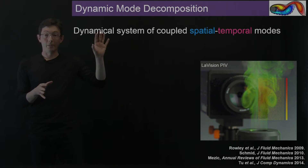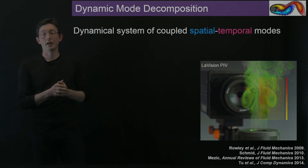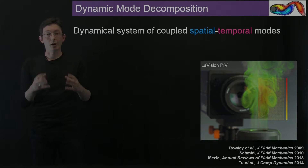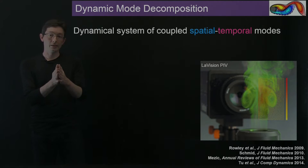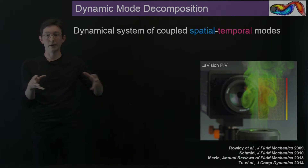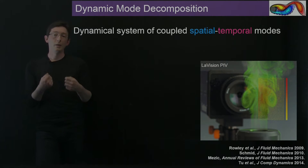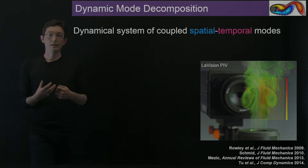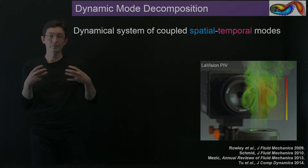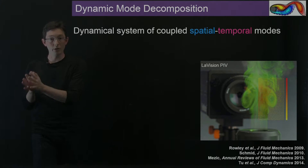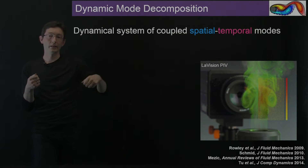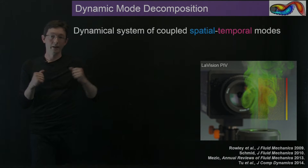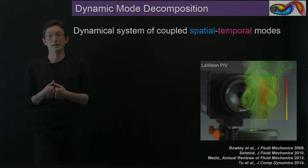A little bit about what Dynamic Mode Decomposition is first. DMD, or Dynamic Mode Decomposition, is a data processing method originally developed in the fluid dynamics community, which takes large data sets — typically of velocity fields or vorticity fields — in time of a fluid simulation or experiment. It provides a spatial-temporal decomposition of this data into dynamic modes that are spatially coherent and oscillate and/or decay or grow at a fixed frequency in time.